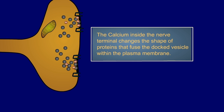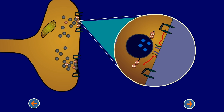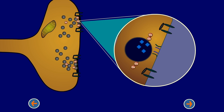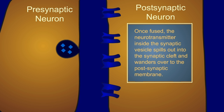Calcium inside the nerve terminal changes the shape of proteins that fuse the docked vesicle with the plasma membrane. When it's fused, the neurotransmitter inside the synaptic vesicle spills out into the synaptic cleft and wanders over to the postsynaptic membrane.